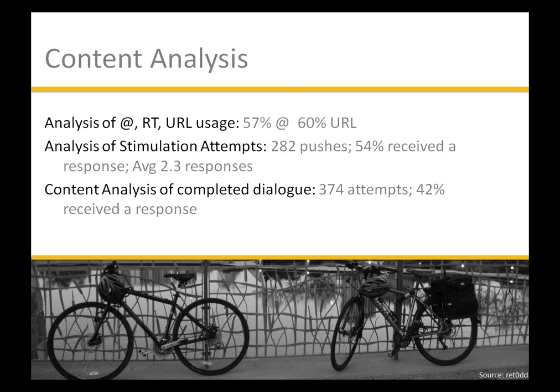Most important was the content analysis of completed dialogues — where somebody posts something, SNAP responds, and there is ongoing dialogue. SNAP made 374 attempts, of which 42% received a response. The question of whether this is good or not is unclear — we don't know where the bar is, which is why these studies are important. As a comparison, if you were in a coffee shop and someone was talking about traffic and you tapped them on the shoulder asking if they'd like to discuss the Austin Strategic Mobility Plan, maybe you'd get 40% to respond.